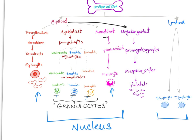The eosinophils will fight large parasites and modulate some allergic inflammatory responses. The B-lymphocyte is responsible for humoral immunity, and the T-lymphocyte is responsible for cellular-mediated immunity. That's it.